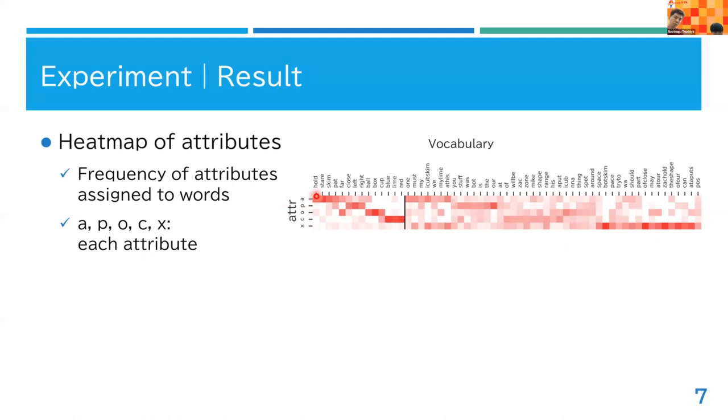This heat map shows the frequency of attributes assigned to words. The vertical axis indicates attributes: A, P, O, C mean action, position, object, and color attributes. X means the attributes are not being linked to sensory information.